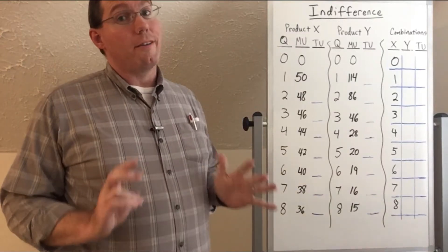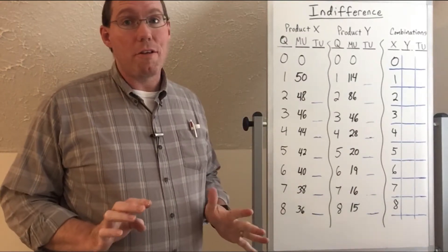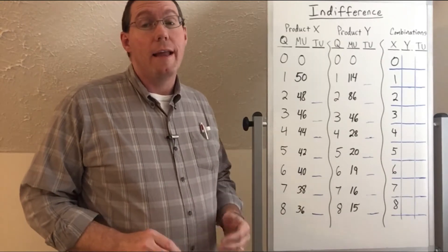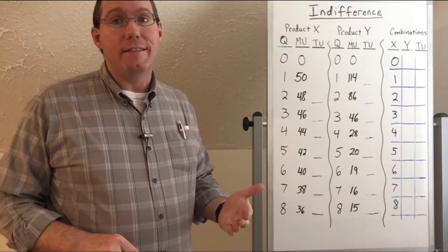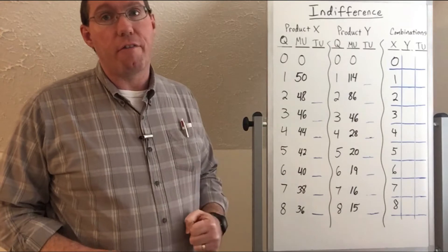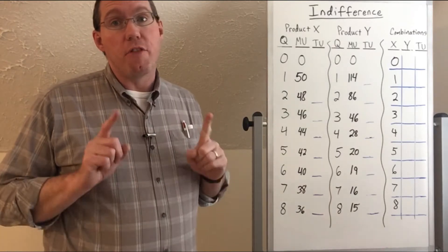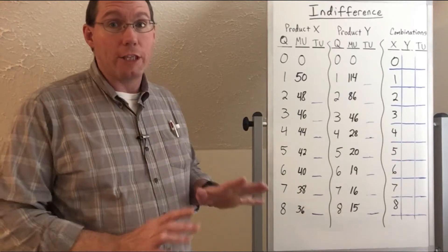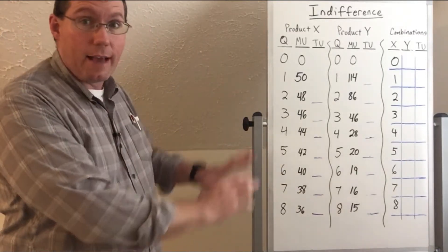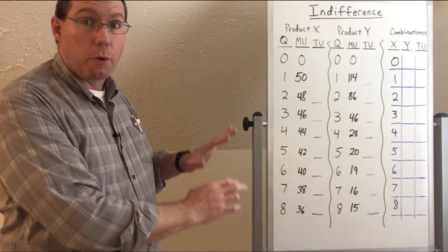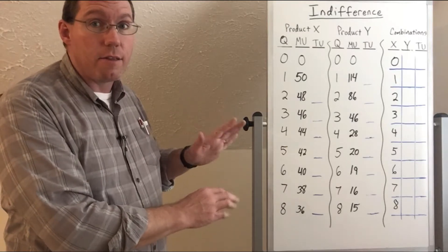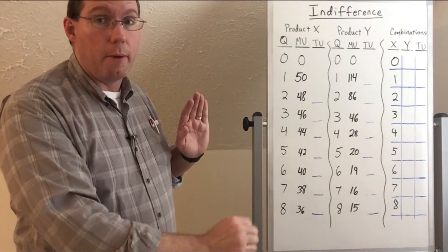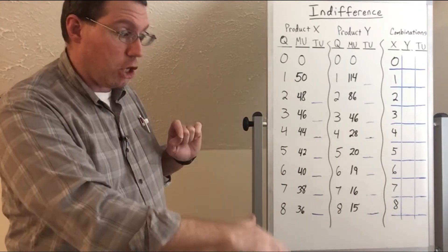So now what we're going to do is take these indifference lines and bend them — we're going to turn them into curves. Why are they going to become indifference curves instead of indifference lines? Because of the law of diminishing marginal benefit. We're going to do the exact same thing we just did, plot the points, and you're going to see that instead of lining up in a straight line, they're going to be curved.